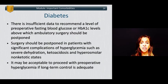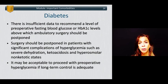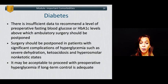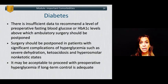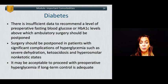There is insufficient data to recommend a specific preoperative fasting blood glucose or hemoglobin A1C level above which ambulatory surgery should be postponed. Surgery should be postponed in patients with significant complications of hyperglycemia such as severe dehydration, ketoacidosis, and hyperosmolar non-ketotic states. It may be acceptable to proceed with preoperative hyperglycemia if long-term control is adequate.